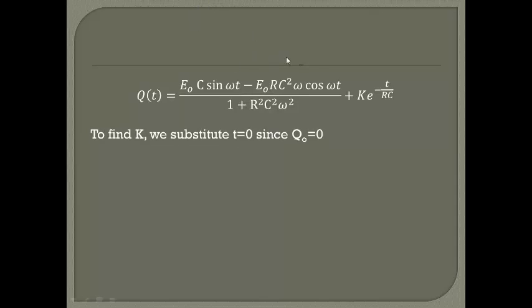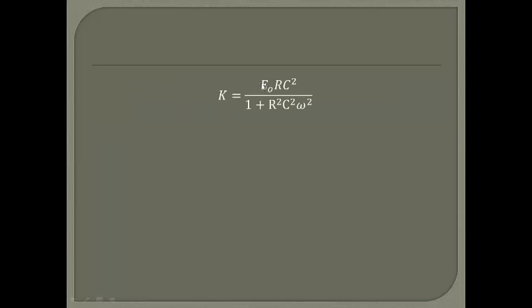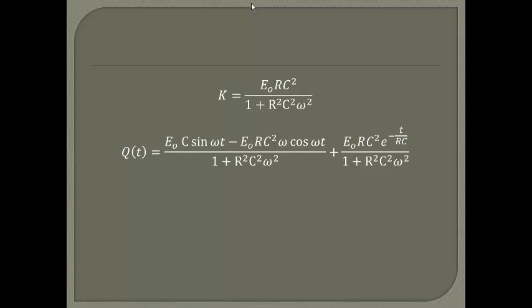To find the constant K, we substitute T = 0 since we are given the initial charge Q(0) = 0. Substituting 0 for Q and T, we get the value of K, which is E₀RC² / (1 + R²C²ω²). Substituting this back in gives us the final answer for Q in terms of t.